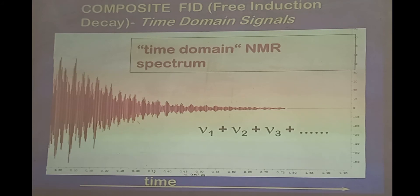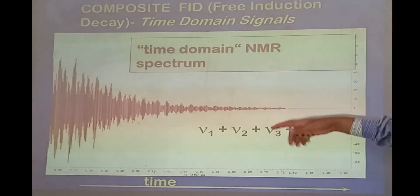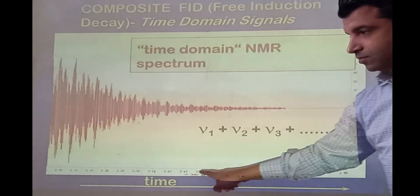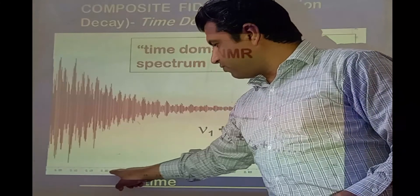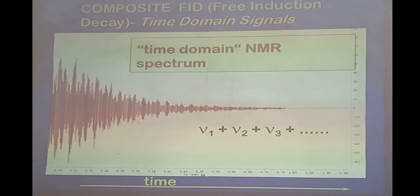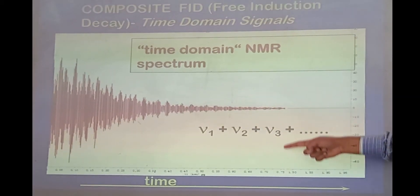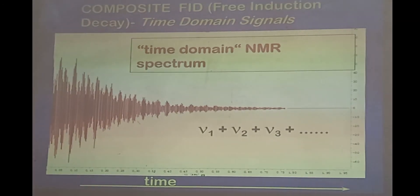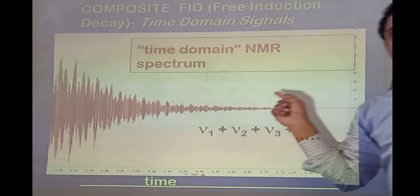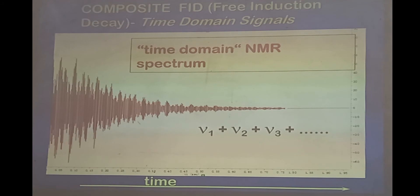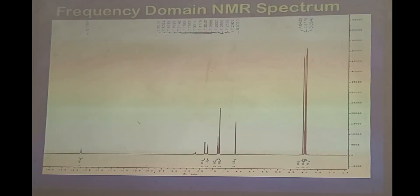Here you can see what a real FID looks like — this is a real FID from one of the molecules. It's a time domain signal; the time scale here is in seconds: 0.05, 0.10, 0.15, 0.30, and so on. This FID comes down to zero at around 0.75 seconds. At the start we have maximum signal. This FID is a stacked, composite signal that contains the frequencies of all the different types of hydrogens present in this molecule, which is why we convert this time domain spectrum into a frequency domain spectrum.